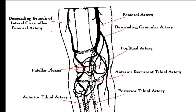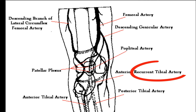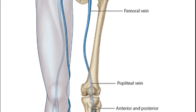Remember three arteries for the blood supply. You have the femoral artery which gives rise to the popliteal artery — that's one. Second, you have the recurrent tibial artery. And for the third, you have the geniculate arteries: superior medial and lateral, and inferior medial and lateral.